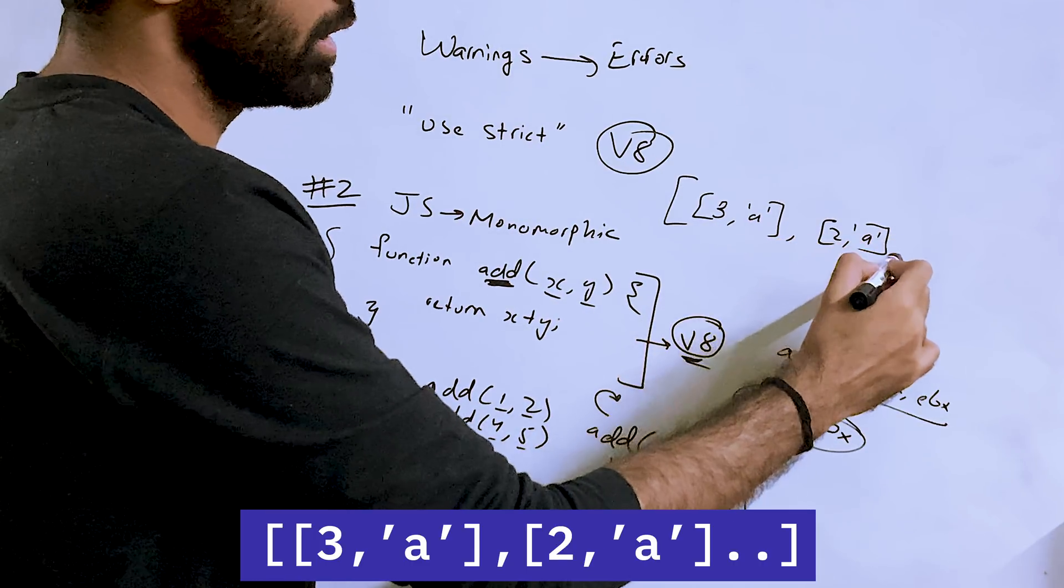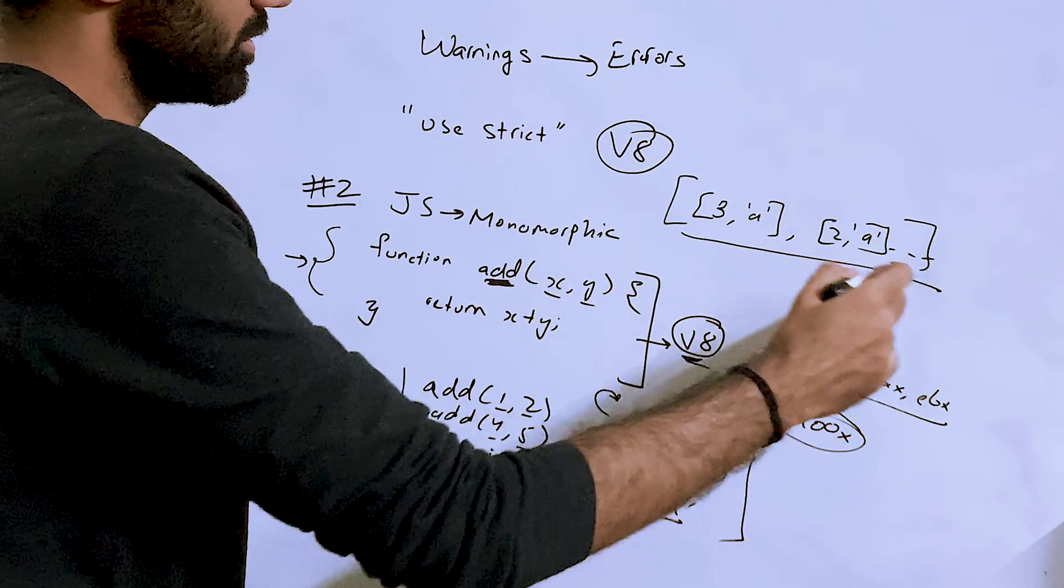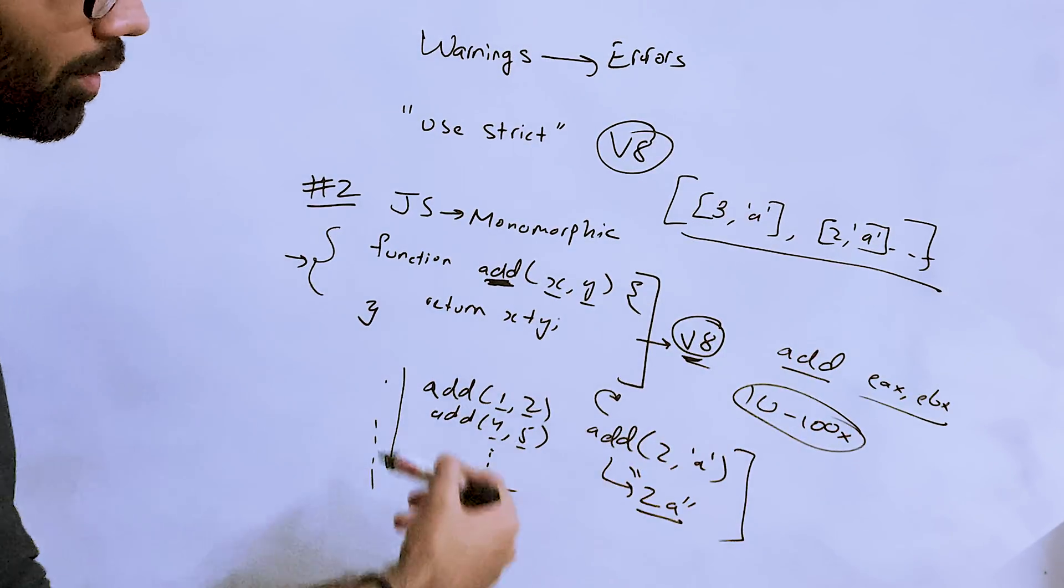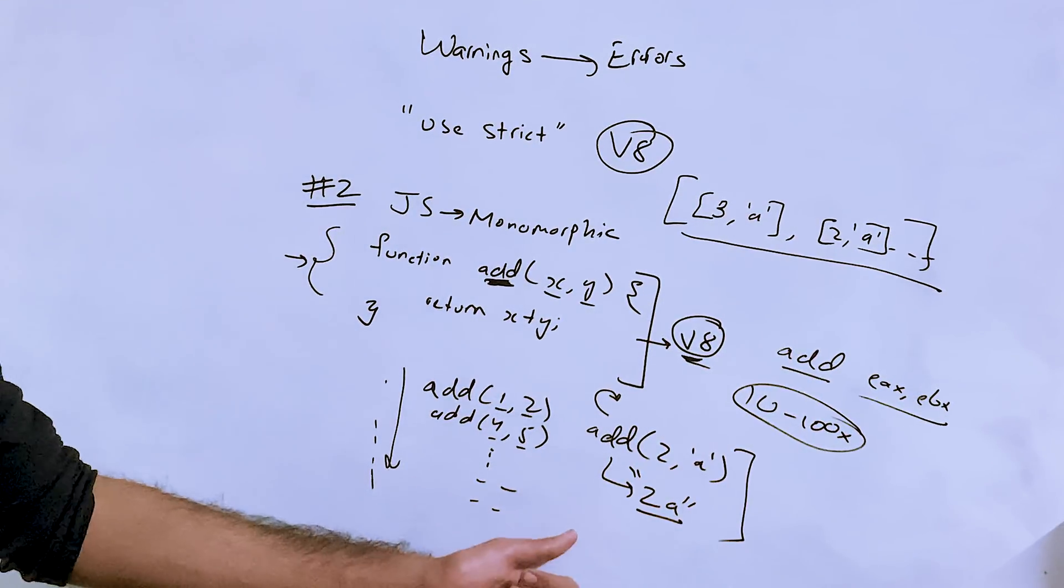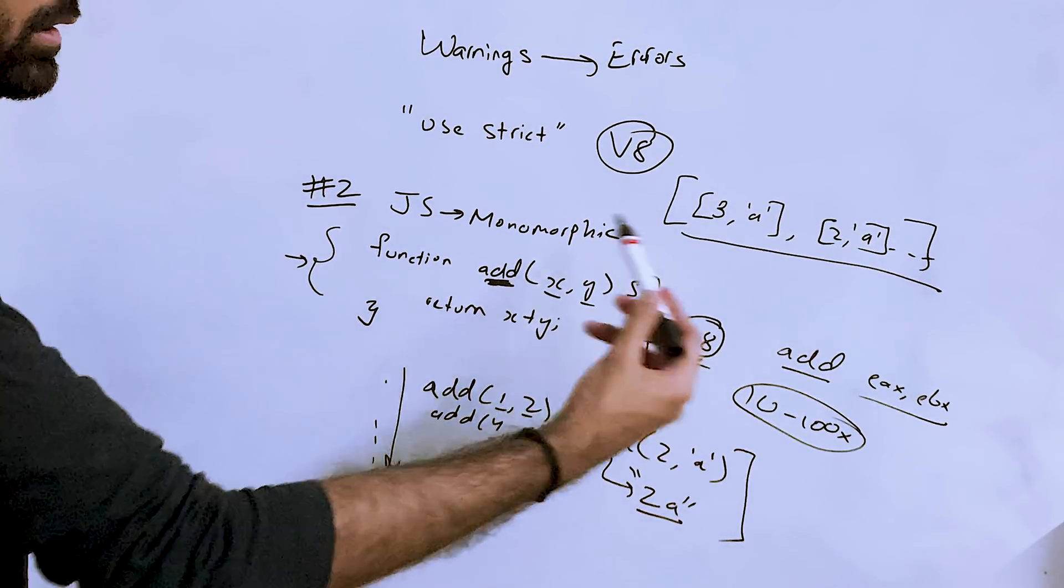For example, you might be following a pattern which is like an array of objects where the first element is a number and second element is a string. It's a very well-known pattern. There's nothing wrong with this pattern, but it is possible that if you use this pattern, then JavaScript engine is not able to optimize your code properly and it de-optimizes it.